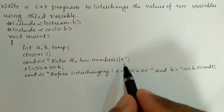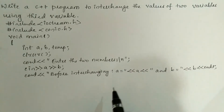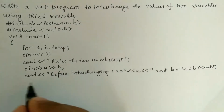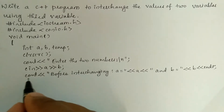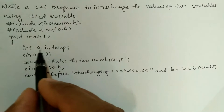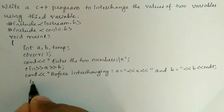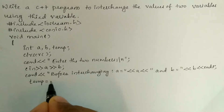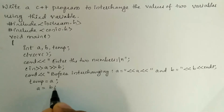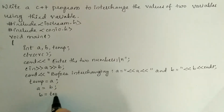We then write the stream insertion operator followed by endl — you can use endl or backslash n, both perform the same operation of bringing the cursor down to the next line. Now let us use the logic to interchange the values of a and b using the third variable temp. We write temp equals a and put a semicolon.